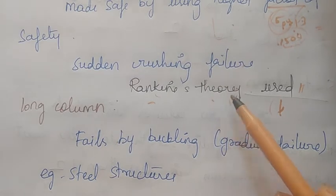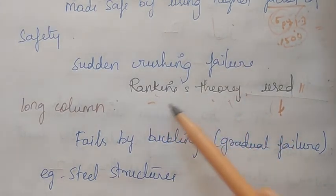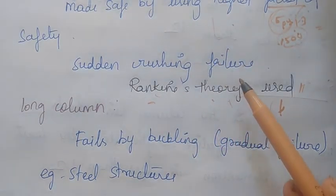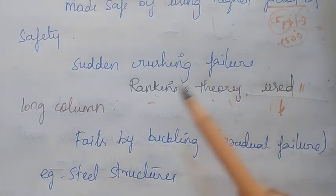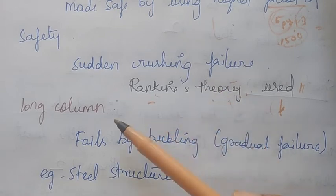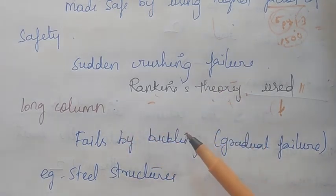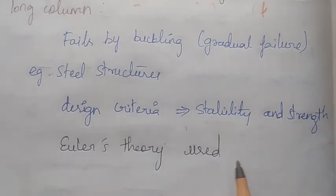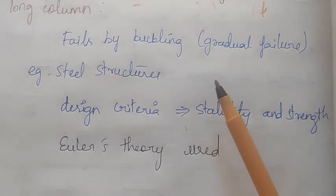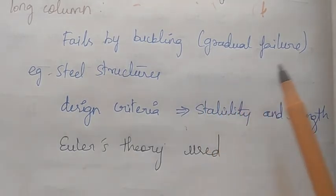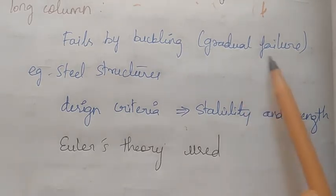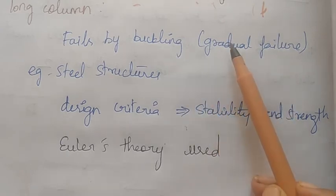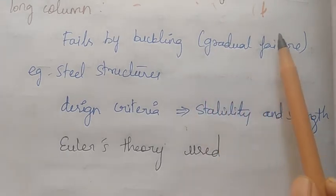The theory is Rankine's Theory. We will change the number of factors as a compression criterion. The design involves criteria from the effective length. This is Rankine's Theory. For buckling, stability is the concern — buckling is a gradual failure, meaning there is warning before total collapse.